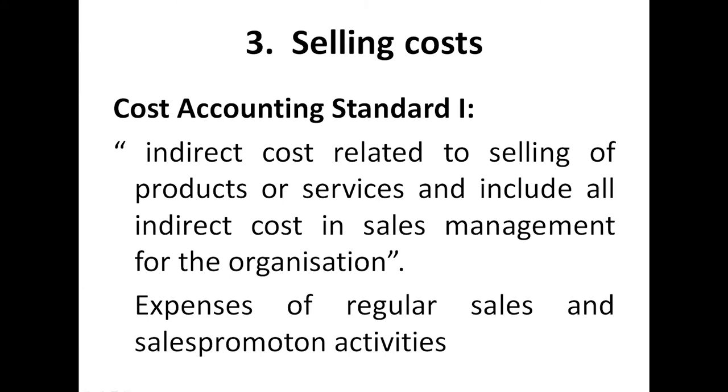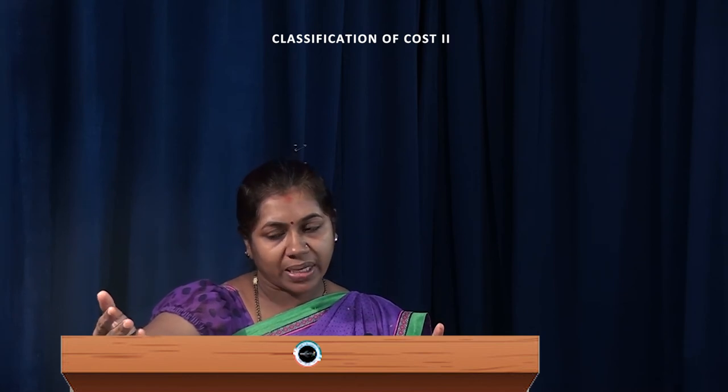Third one: selling cost. After producing a product, there is a need of incurring various expenses for selling it, and these come under selling cost. As per cost accounting standard one, it is the indirect cost relating to selling of products or services, including indirect cost in sales management. It is incurred for regular sales and sales promotional activity — such as advertisement expenses, commission paid to the salesman, and publicity charges.